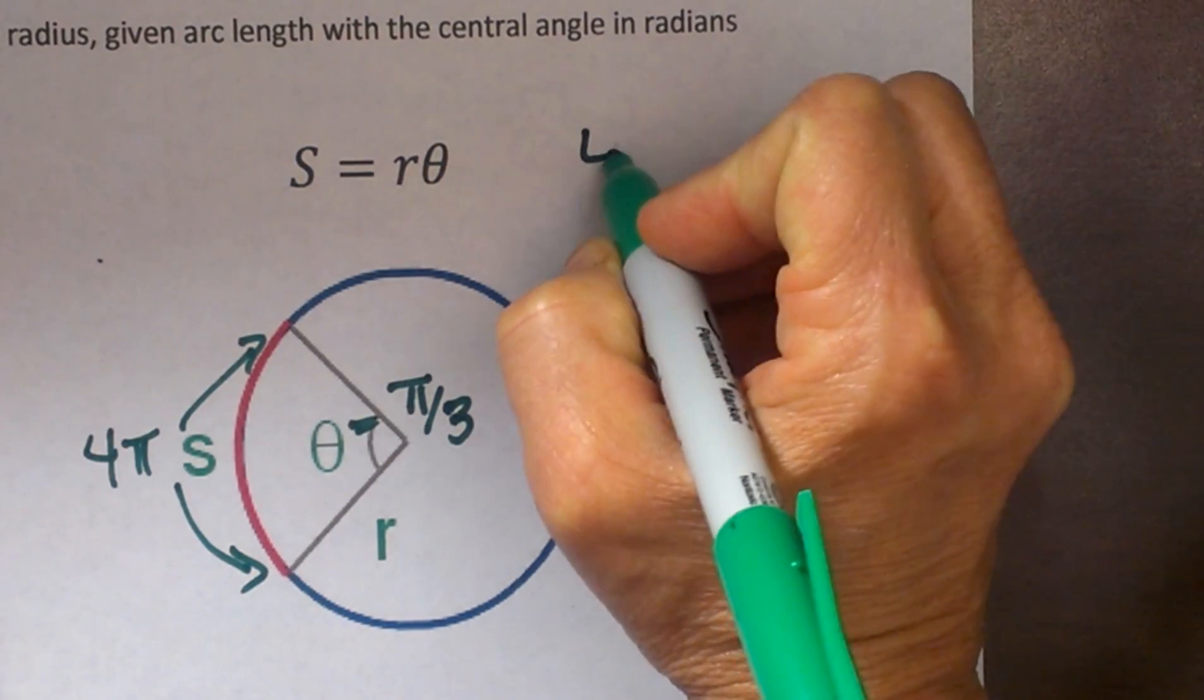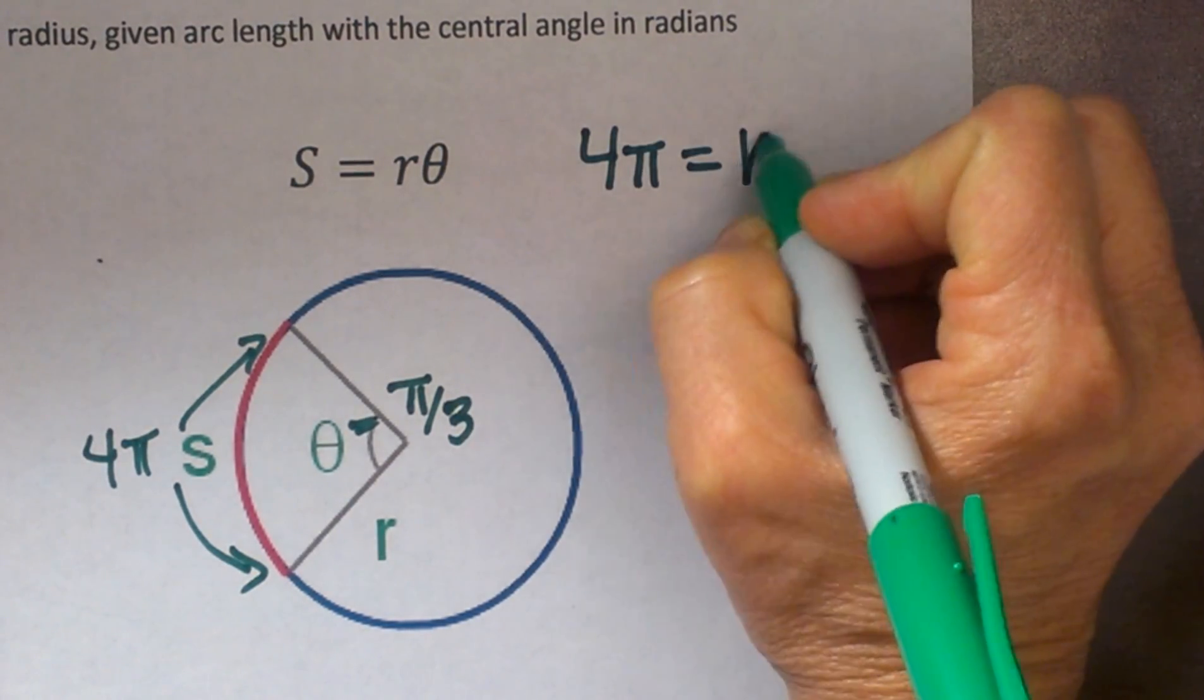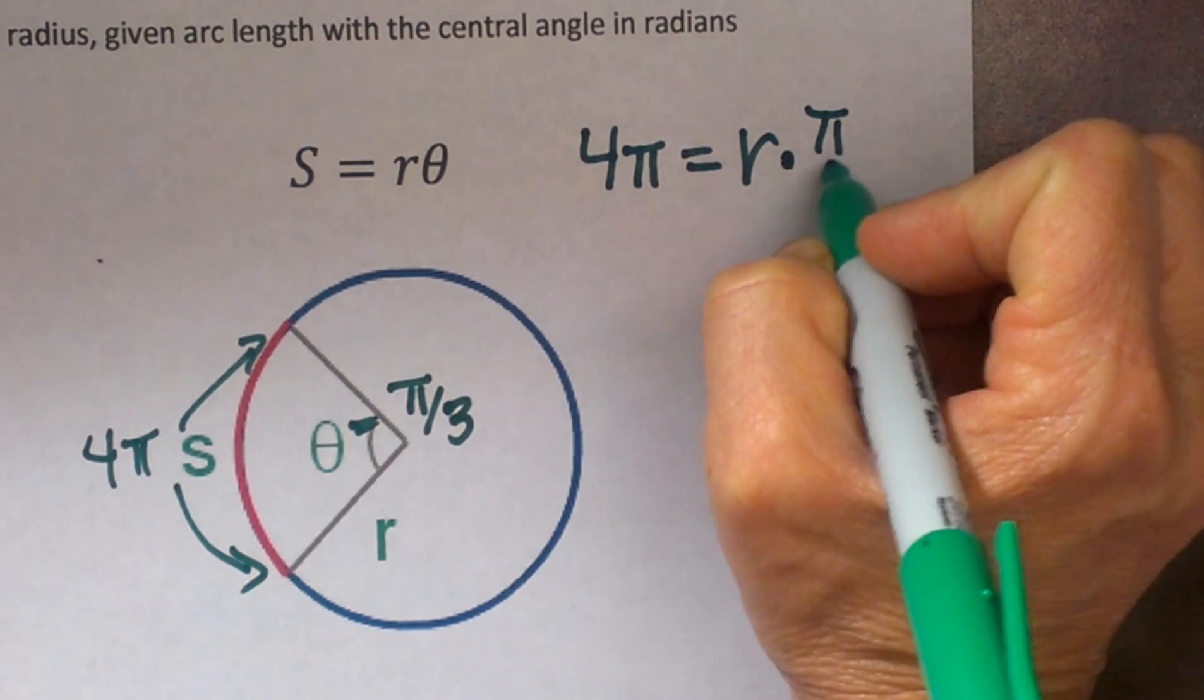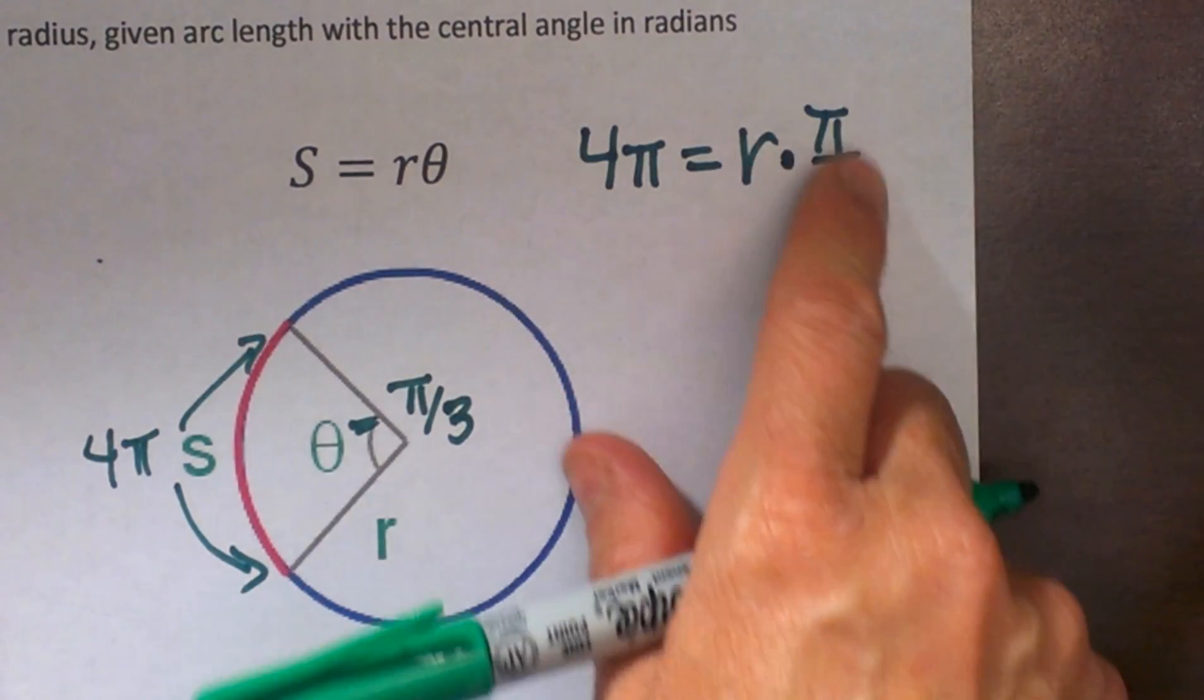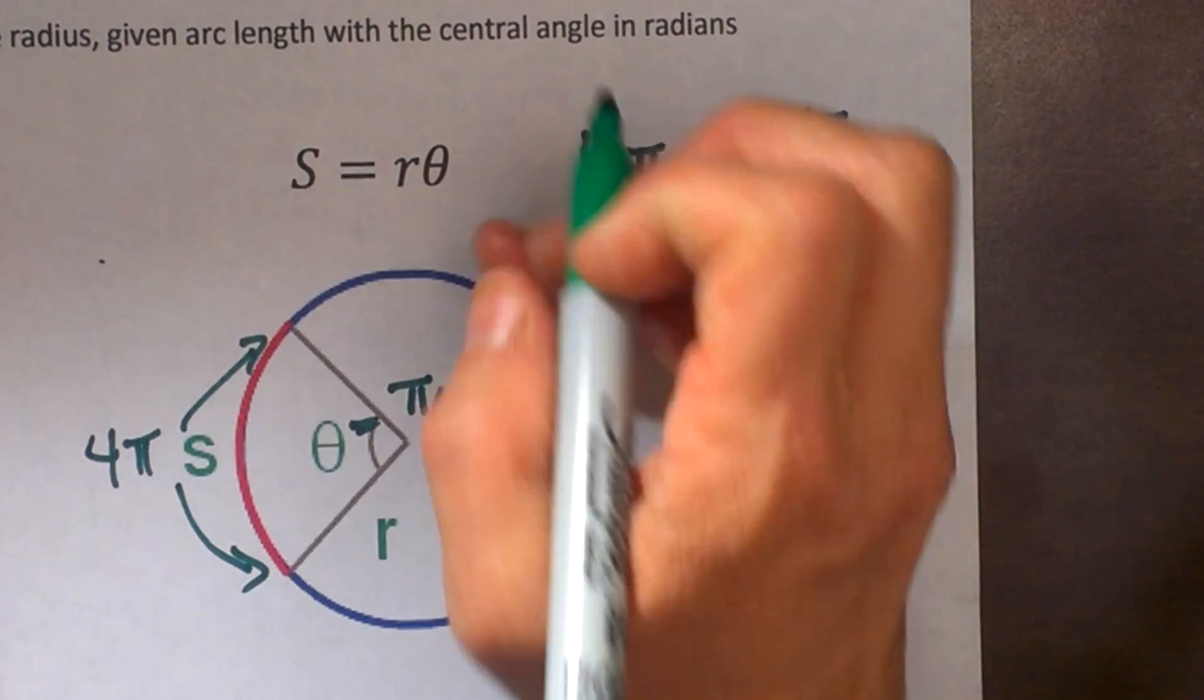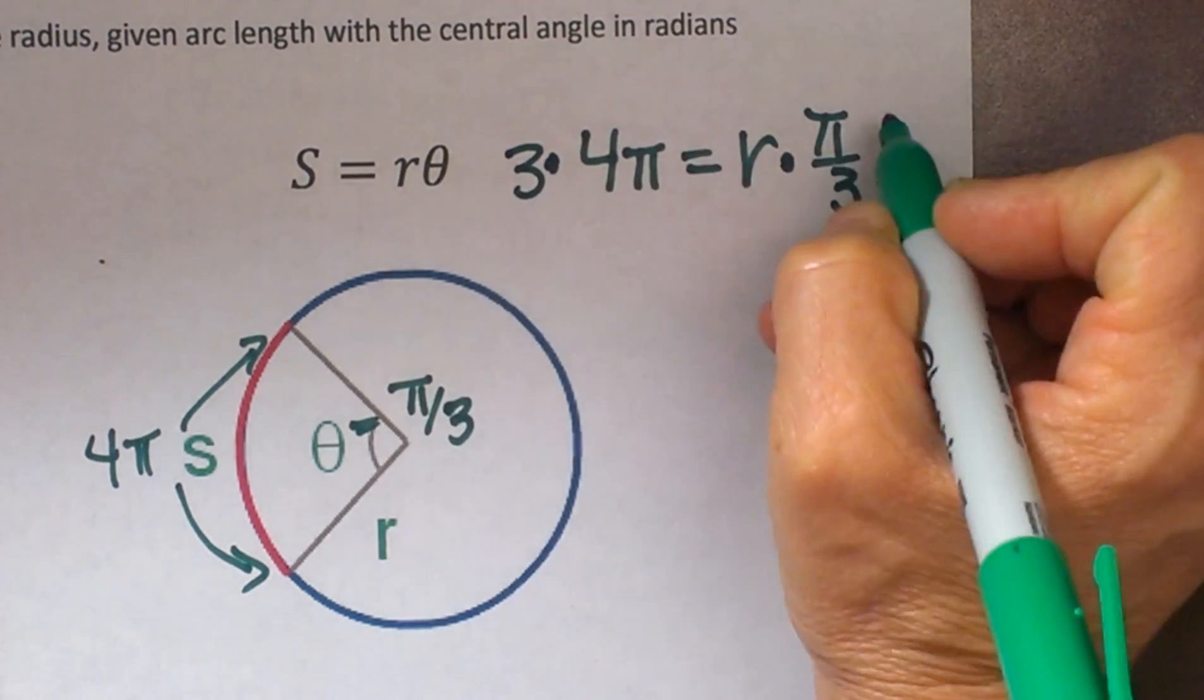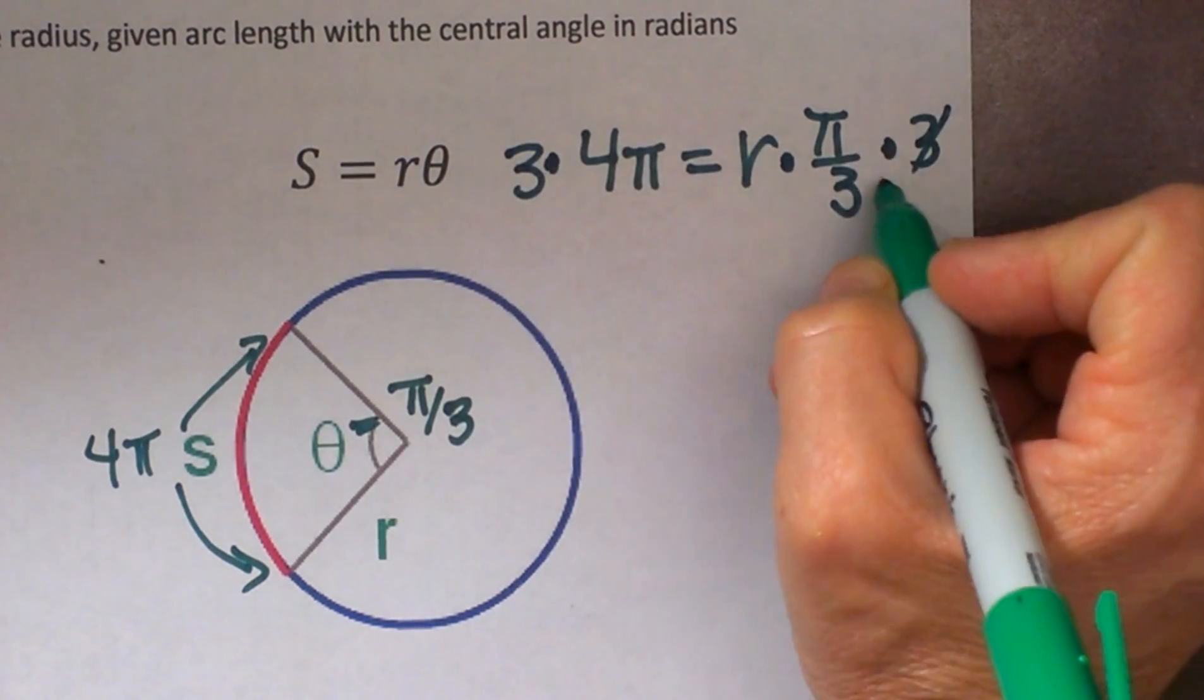We are going to plug in 4π equals R times π/3. The first thing we need to do is get rid of this fraction. So let's multiply both sides by 3. Multiply this side by 3 and this side by 3 and our 3 is gone.